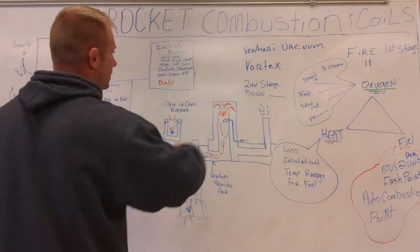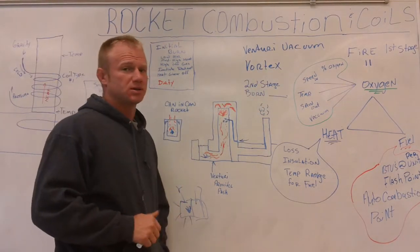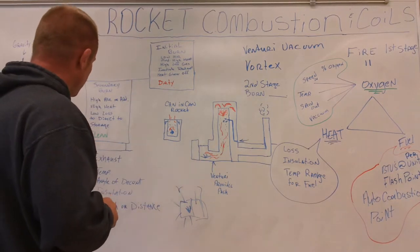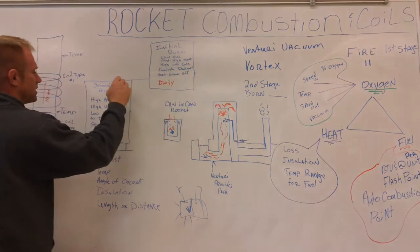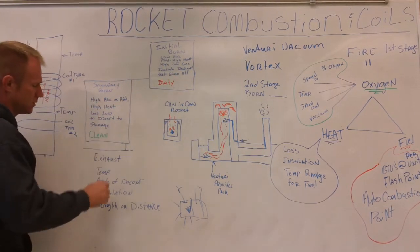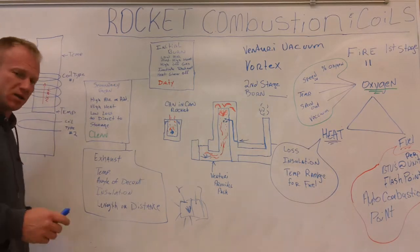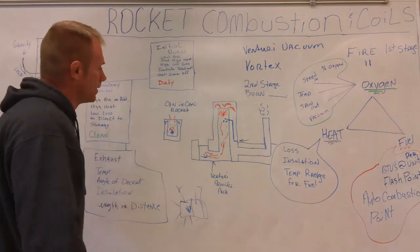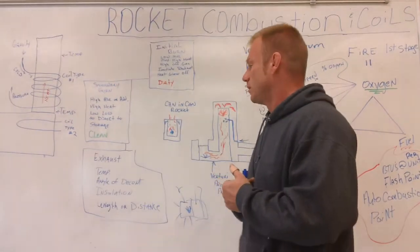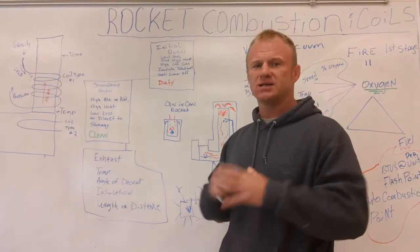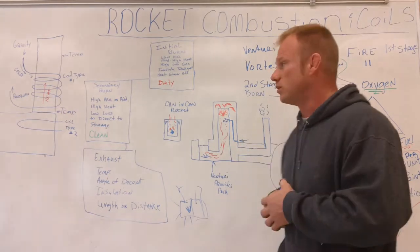And again, anywhere in this, you can use the Venturi vacuum or the vortex principles to aid in these processes. So this would be one stage of a stove, of any stove you try to design. Then you've got a secondary stove, which you're trying to burn clean. We went over those aspects. And then there's a third, and that would be the exhaust. And the exhaust is going to be the temperature of the exhaust, the angle of descent, the insulation, and the length of the distance as the exhaust is traveling. So these are all things that go into making the rocket stove burn as clean as it does. And if we can understand these principles and then apply them to any stove, then we ought to be able to build more efficient stoves.